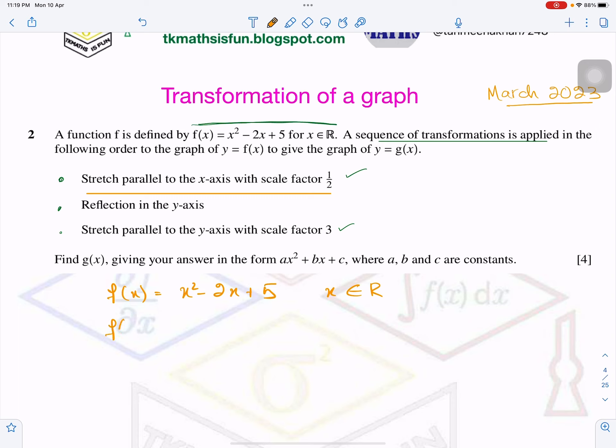When it says stretch parallel to the x-axis by factor 1/2, it means now the question is talking about this. We have just seen if your function is f(x) and you are stretching parallel to the x-axis by scale factor 1 over a, it means this is your function now. So I will apply 2x in place of x throughout. So this will give me 4x squared minus 4x plus 5. So first transformation I have applied because I have to get at the end the equation in this form and I will call it g(x) after applying all three transformations.